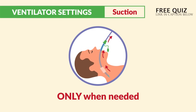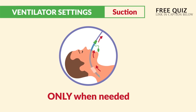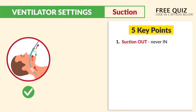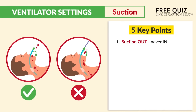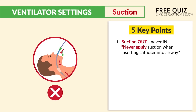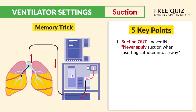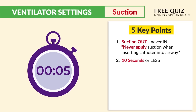Here are the top five key points that are most tested — write these down. Number one: we always suction out, never in. The key rule is to never apply suction when inserting the catheter into the airway. Memory trick: to get secretions out, we suction on the way out.